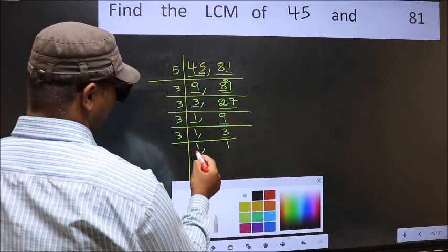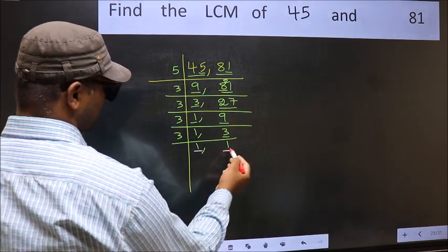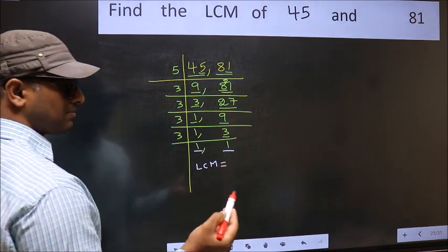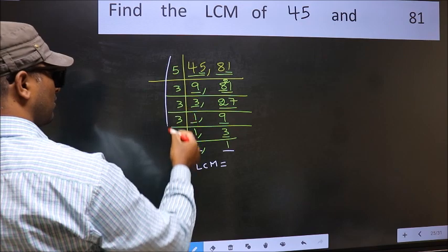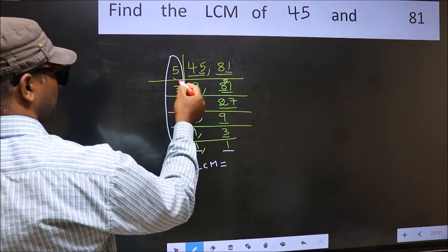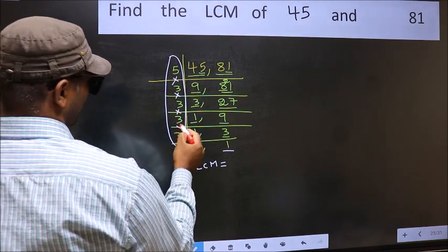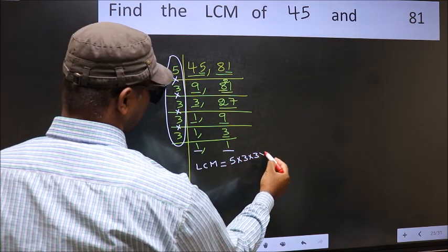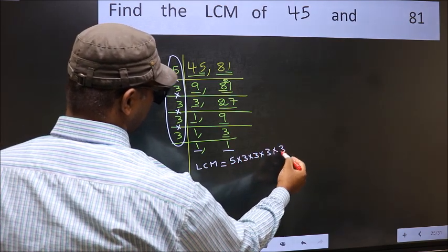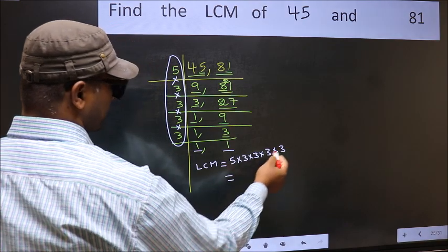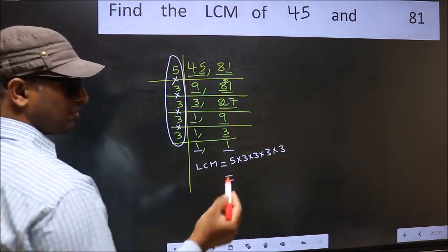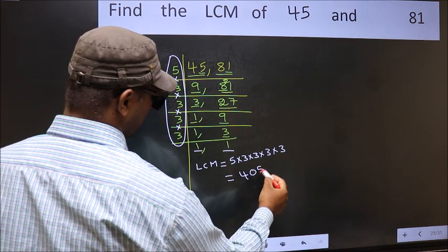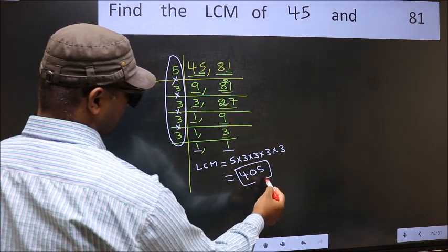We got 1 in both places, so our LCM is the product of all the divisors used: 5 × 3 × 3 × 3 × 3. When we multiply these numbers, we get 405. So the LCM of 45 and 81 is 405.